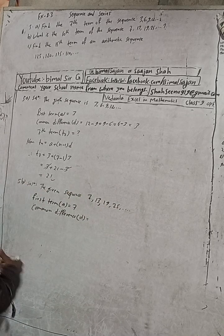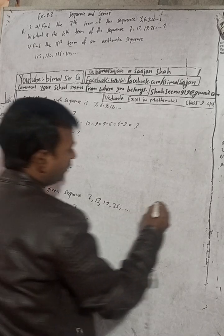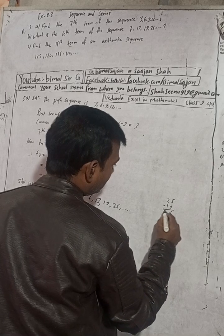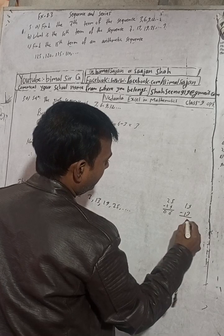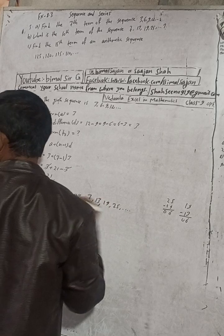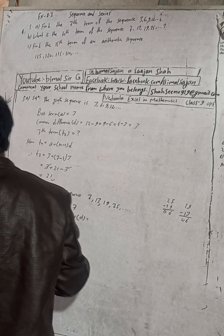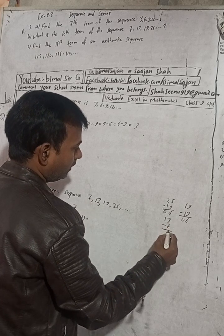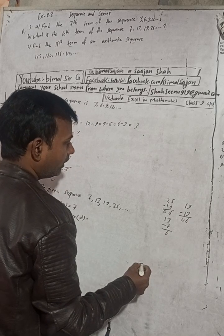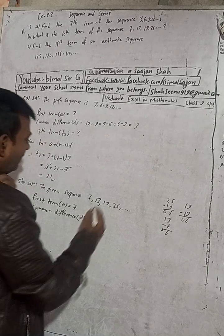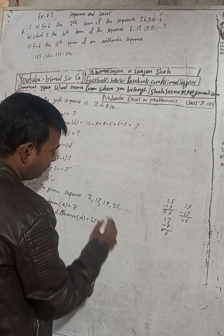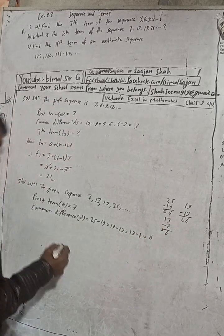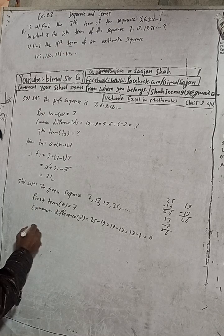The common difference D is found by subtracting consecutive terms: 25 minus 19, 19 minus 13, and 13 minus 7. We can write: 25 − 19 = 19 − 13 = 13 − 7 = 6. So the common difference is 6.